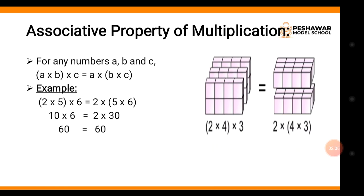Associative property of multiplication — associative property is similar to commutative property but here we will have three numbers. For any numbers a, b, and c: (a multiply b) multiply c is equal to a multiply (b multiply c). یعنی اگر ہم three whole numbers لیں — first two numbers کو multiply کر لیں پھر اس result کے ساتھ تیسرا number multiply کریں — یہ equal ہوگا اس کے جب ہم last two numbers کو multiply کریں اور پھر first number سے multiply کریں، تو answer same آئے گا۔